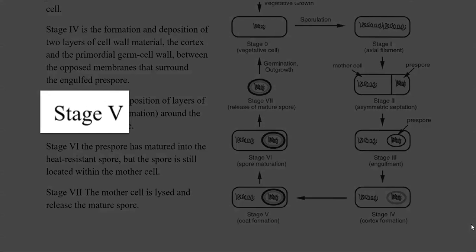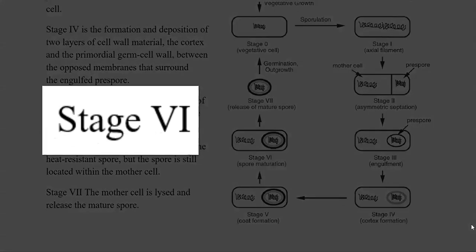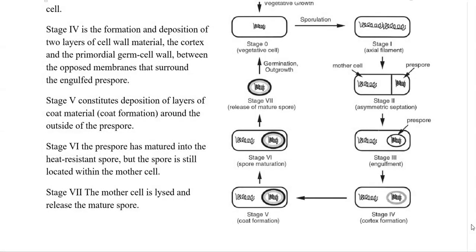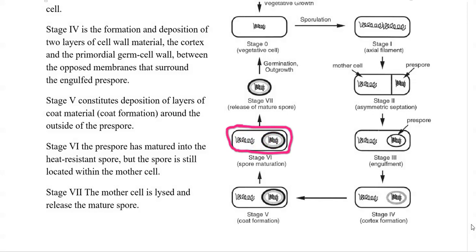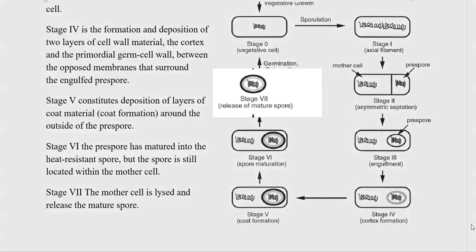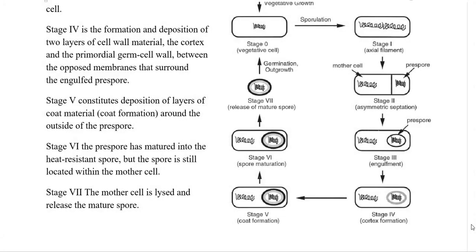Stage five mainly constitutes the deposition of coat layers — mainly the coat formation. The coat forms outside the structure that is within the vegetative cell. The mother cell or vegetative cell is then lysed and releases the matured spore. This matured spore, when exposed to the right nutrient conditions, can germinate and outgrow as a vegetative cell, which is also referred to as stage zero.